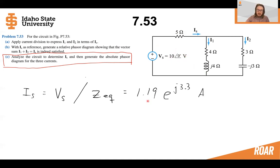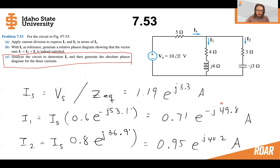Using our calculator, you can quickly find the polar form of this 1.19e to the j3.3. So this is the actual current IS. Recall that I1 and I2, we have already found in terms of IS. This was the first part that we solved for in part A. If we multiply them together, now that we know what IS is, we can solve for the actual phasor I1 and I2 when we know what IS is.